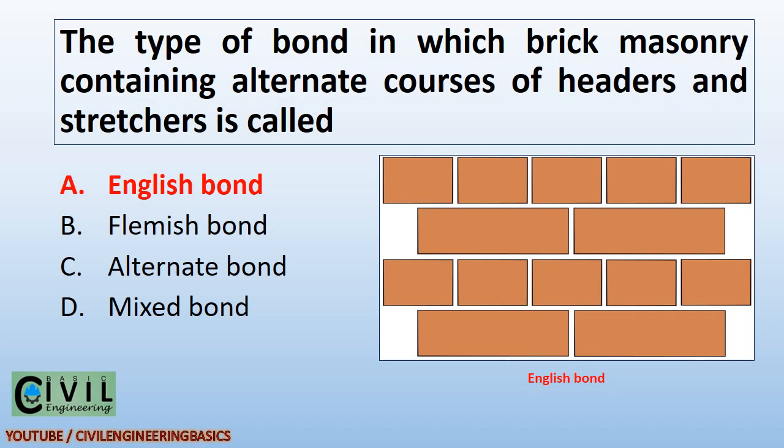The type of bond in which brick masonry contains alternate courses of headers and stretchers is called English bond. You can see the typical drawing of English bond given here.